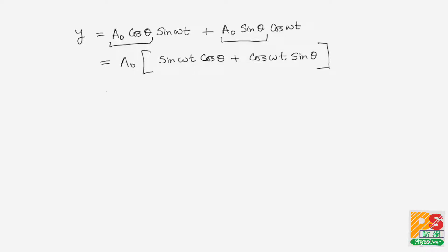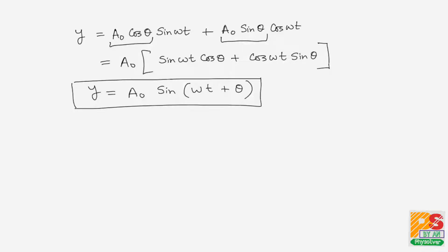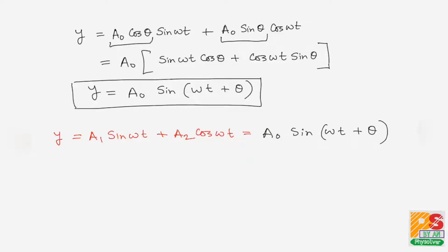This expression is nothing but sin(ωt + θ). Therefore, the equation y = a1·sin(ωt) + a2·cos(ωt) can be rewritten as y = a0·sin(ωt + θ).